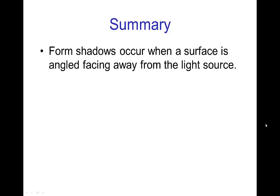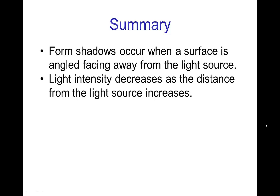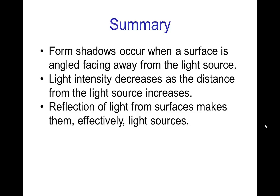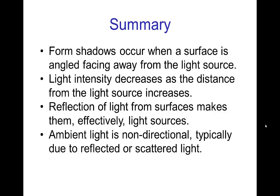So in summary, form shadows occur when a surface is angled away from the light source. Light intensity decreases as the distance from the light source increases, so we have both this effect of angle and distance. Reflection of light from surfaces makes them effectively light sources, so this is reflected light. Ambient light is non-directional, typically due to reflected light or scattered light in the atmosphere. The sky is blue from scattering. And the daytime sky is a significant light source that should be considered when thinking about lighting.